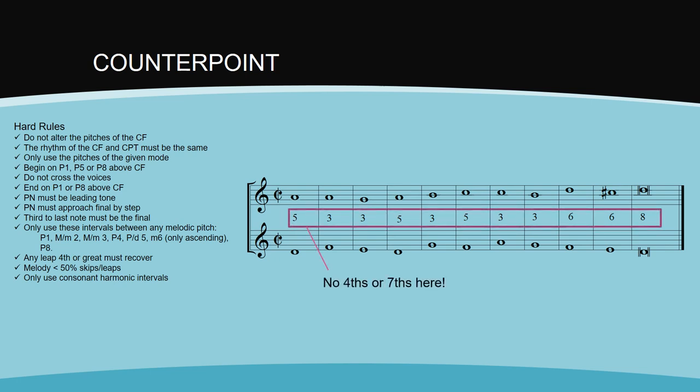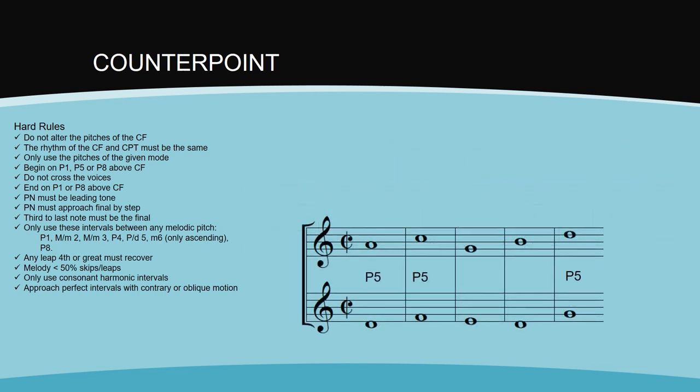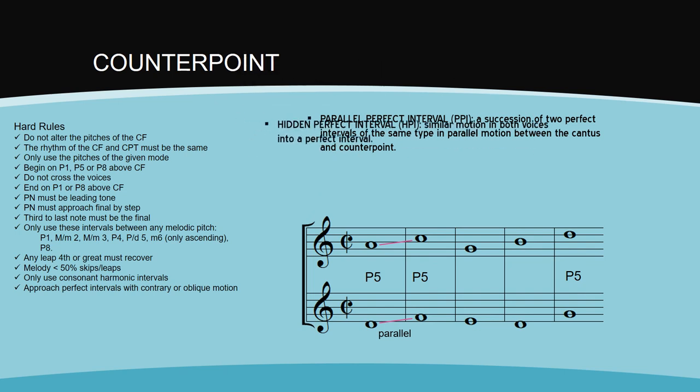Finally, all perfect intervals should be approached by contrary or oblique motion in order to avoid parallel and hidden perfect intervals. A parallel perfect interval is a succession of two perfect intervals of the same type in parallel motion between the cantus and counterpoint. A hidden perfect interval is similar motion in both voices into a perfect interval.